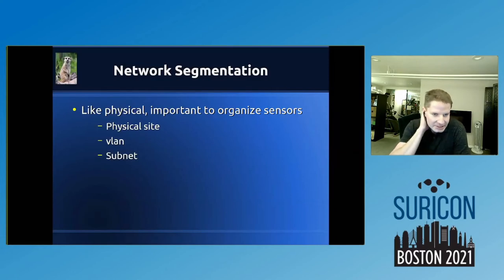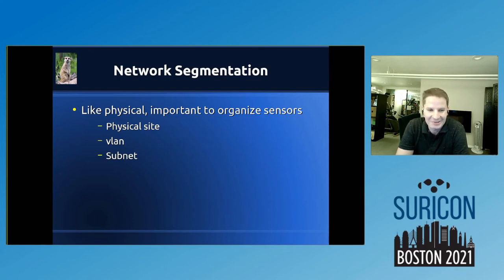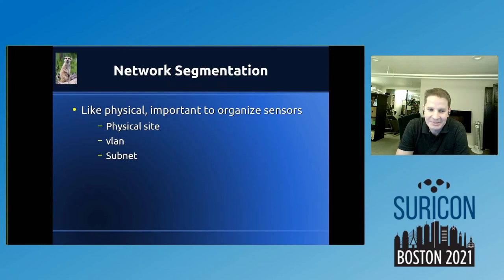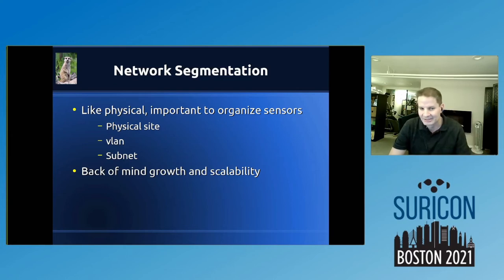For network segmentation — like physical environments, it's important to organize sensors by physical sites, VLANs, and subnets. I work mostly in smaller environments so it's typically by physical site, but in an enterprise environment I would definitely go the route of organizing by subnets and VLANs to help organize log outputs. Your logs are going to be easier to read and troubleshooting will be easier. Keep this in the back of your mind for growth and scalability.